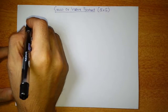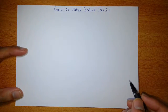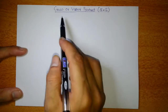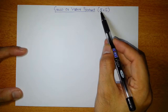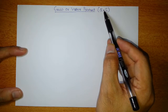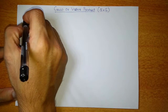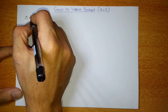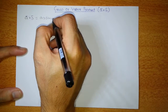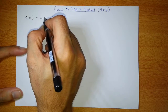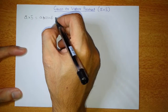This video is about the basics of cross product. Cross product is also called vector product because the outcome is a vector quantity. When vector A takes the cross product with vector B, the outcome is a vector. The magnitude of A cross B is AB sinθ, where A is the magnitude of vector A, B is the magnitude of vector B, and θ is the angle between them.